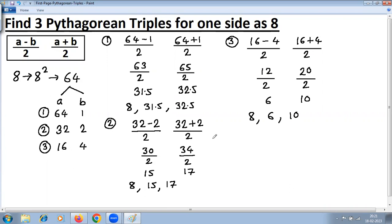So like this, we've got three triples for the same value or same side 8. First triple is 8, 31.5, 32.5. Second triple is 8, 15, 17. And the third: 8, 6, 10. So all three triples refer to side 8. Thank you.